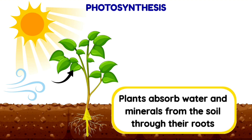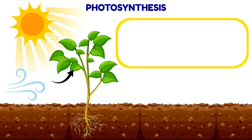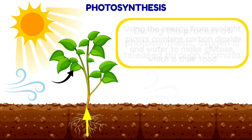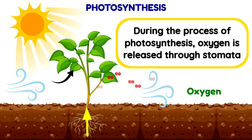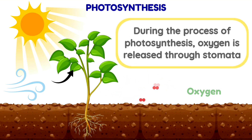Plants also absorb water and minerals from the soil through their roots. Using the energy from sunlight, plants combine carbon dioxide and water to make glucose, which is their food. During this process, oxygen is released as a bonus through the stomata.